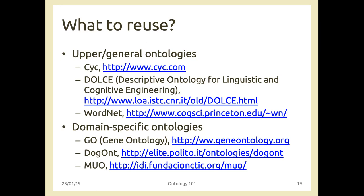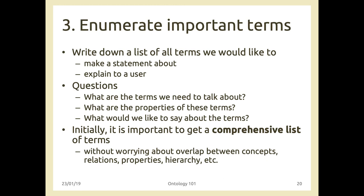It's always a good step to consider what exists before starting to develop an ontology. In our university education example we skip this part. Step three: enumerate important terms. Write down a comprehensive list of all terms you would like to make statements about or explain. Three questions: what are the terms we need to talk about? What are the properties of these terms? And what would we like to say about them?